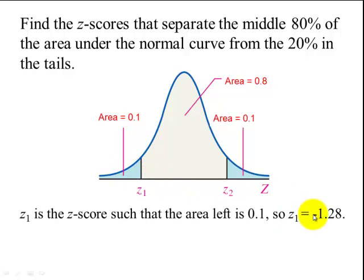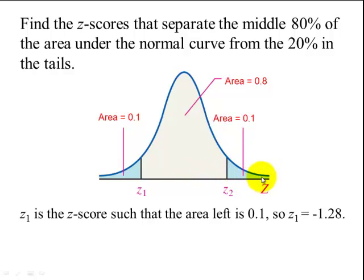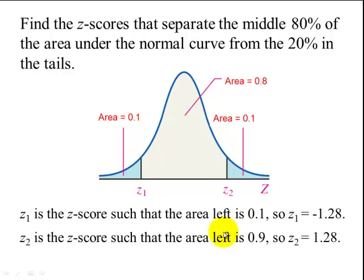That turns out to be negative 1.28. To find our second z-score, which will be positive since it is above 0, we look for the closest thing to 0.9, because to the right we have 0.1, so to the left we have 1 minus 0.1 which is 0.9. That z-score is positive 1.28.